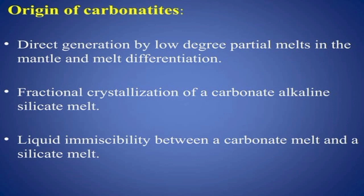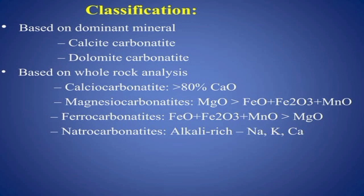As a classification based on dominant mineral, carbonatites are classified as calcite carbonatite and dolomite carbonatite based on the presence of calcite and dolomite. Based on whole rock analysis, they are classified as: calciocarbonatite, with almost 80% CaO; magnesiocarbonatite, where MgO concentration is greater than FeO + Fe₂O₃ + MnO; ferrocarbonatite, where FeO + Fe₂O₃ + MnO is greater than MgO; and natrocarbonatite, which is alkali-rich and contains sodium, potassium, and calcium.